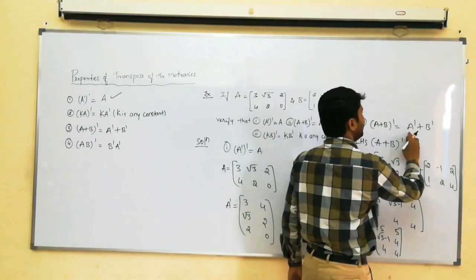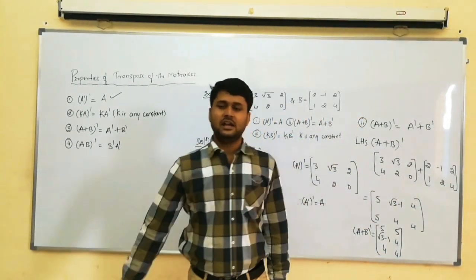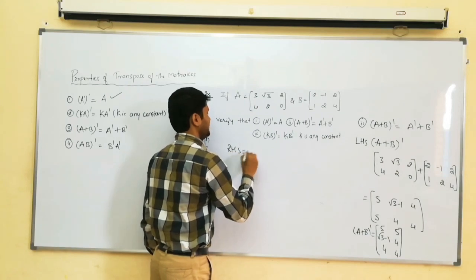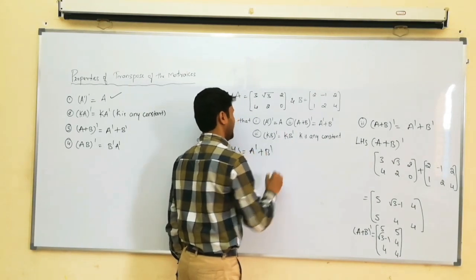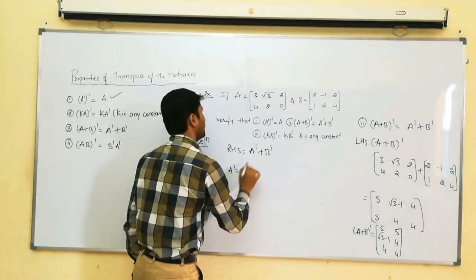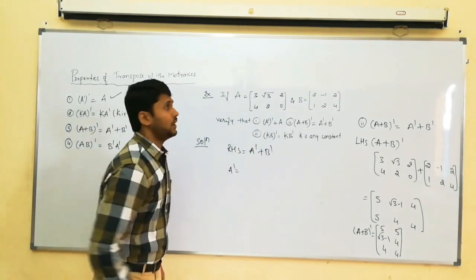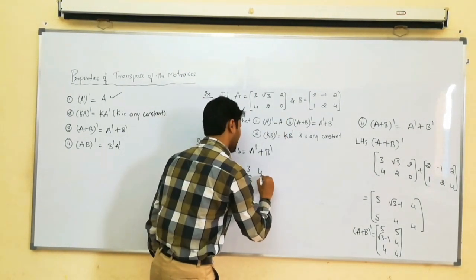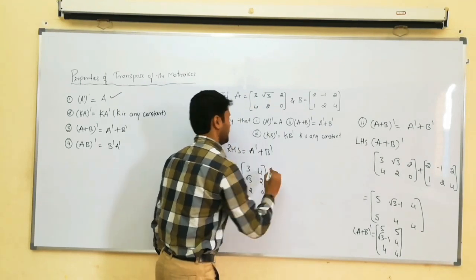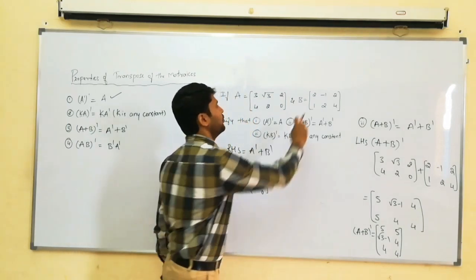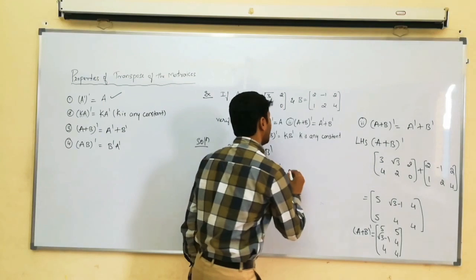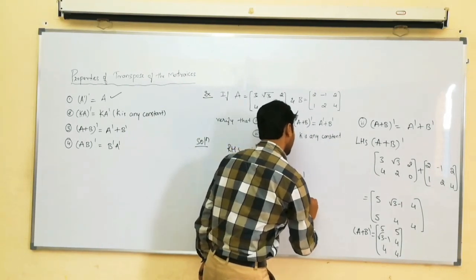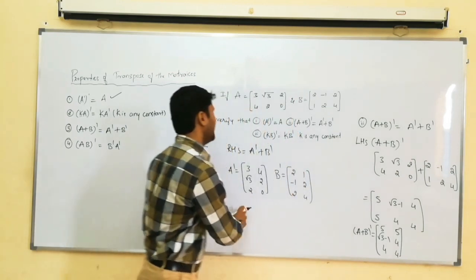In the RHS, we have A transpose plus B transpose. Consider RHS equal to A dash plus B dash. A dash: first row as first column gives 3, 4; second row as second column gives root 3, 2; third column gives 2, 0. B dash: first row as first column gives 2, 1; second row as second column gives minus 1, 2; third gives 2, 4. We have to add these two matrices.